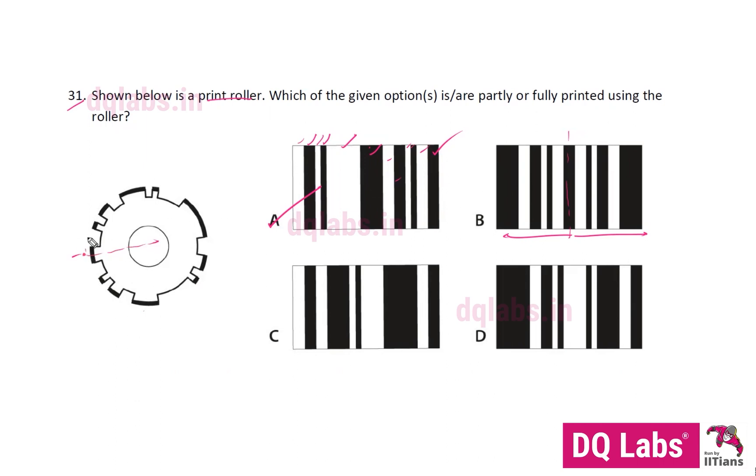This black part, this white. Small black, small white. Medium black, medium white. Slightly larger black. And it's the same here. Same here, same side here. So B is printed this way, either here or this way.